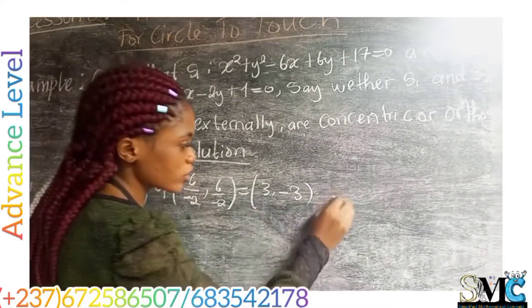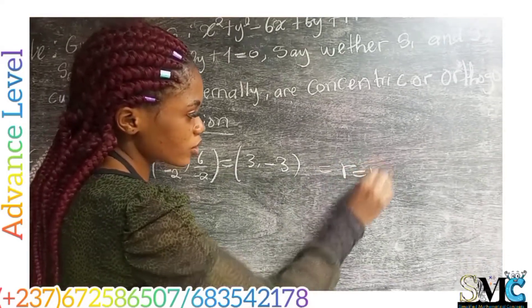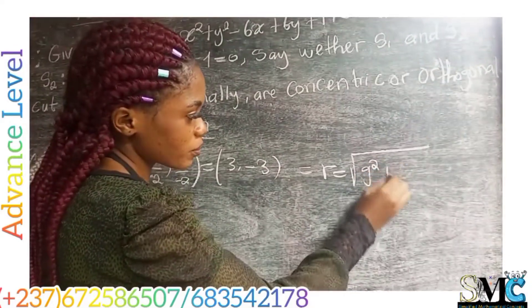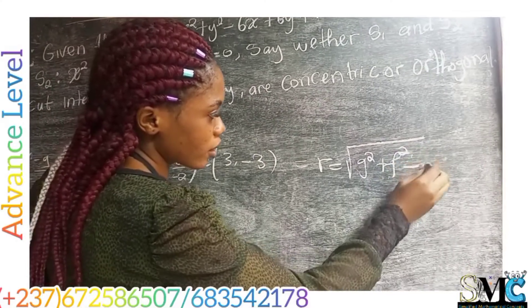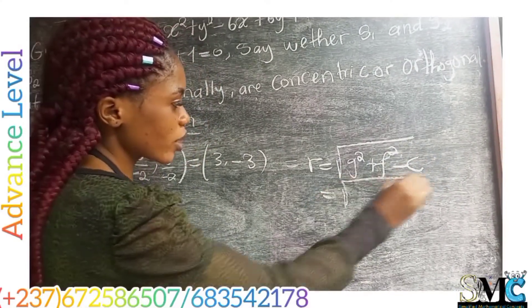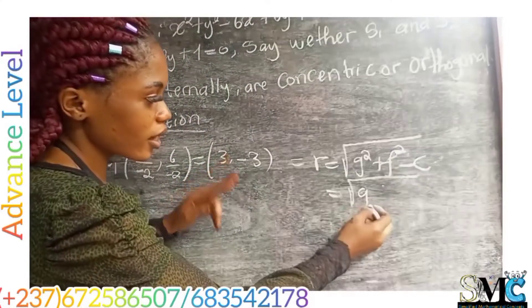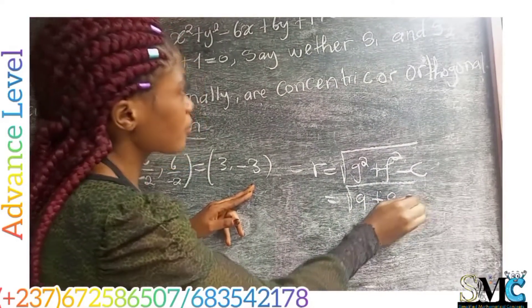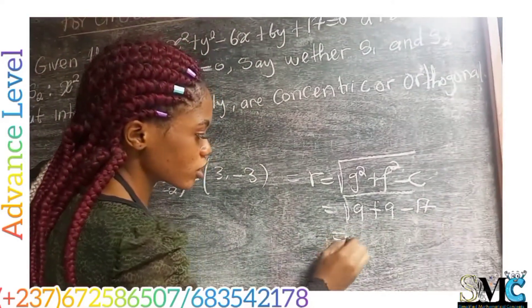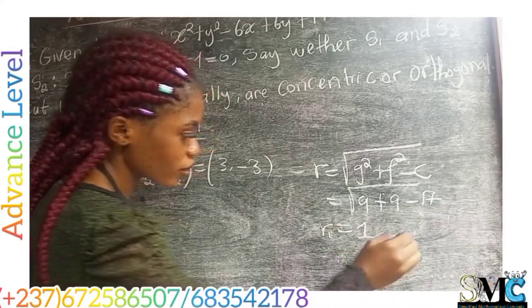And we saw that the radius is equal to the square root of G squared plus F squared minus C, which is the square root of 9 plus 9 minus our C, which is 17, which gives us R1 to be 1.